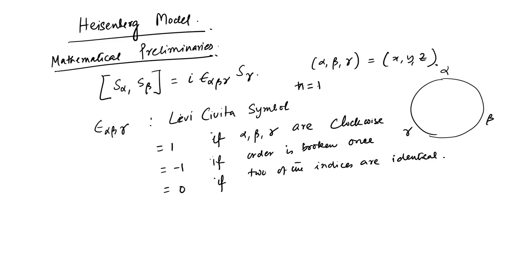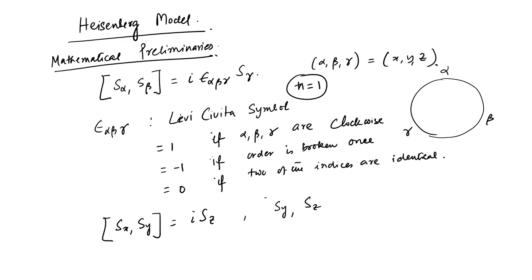We have taken ℏ = 1 throughout. So we have [S_x, S_y] = i S_z, and [S_y, S_z] = i S_x, and so on. None of the components of the spin vector commute with each other, but they all commute with the S² operator. We will use the representation in which S_z is diagonal. We are talking about the S = 1/2 Heisenberg chain.